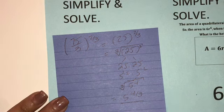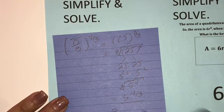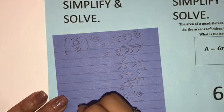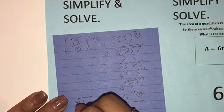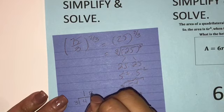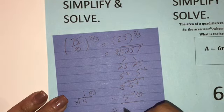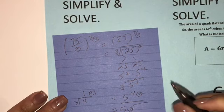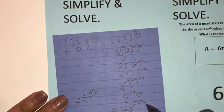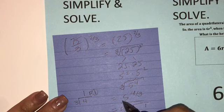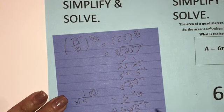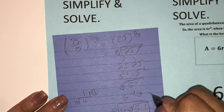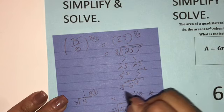This right here is an acceptable answer. I'm going to simplify it more. 3 goes into 4 one time with a remainder of 1. So 5 goes outside the radical. So it was a cube root. And then the 1 goes inside with the base of 5. So this is the correct answer. Or this right here could be the correct answer.